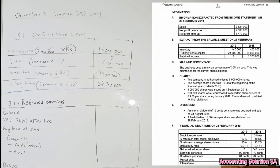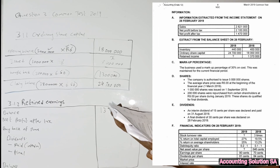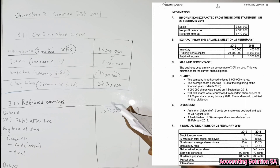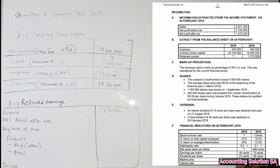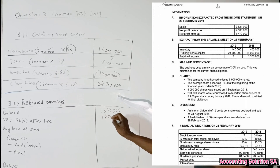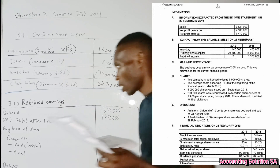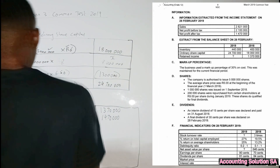Now let's proceed to retained income. The opening balance at the beginning was given as 1,370,000. After that, the net profit after tax — if you check on your income statement you'll find it — is 1,400,000. Very simple.